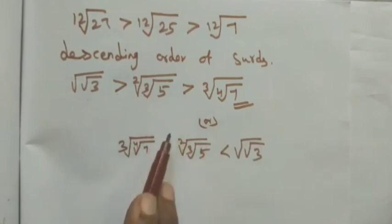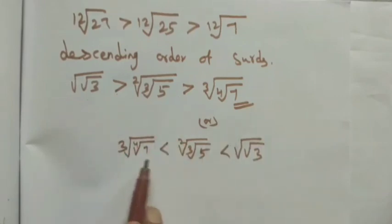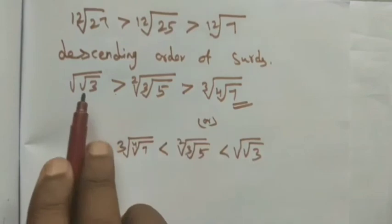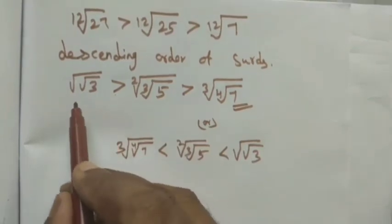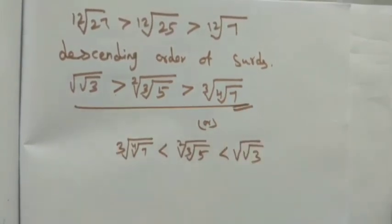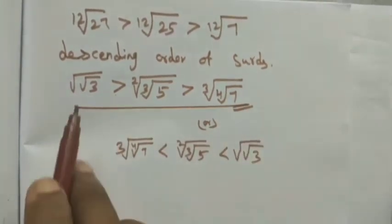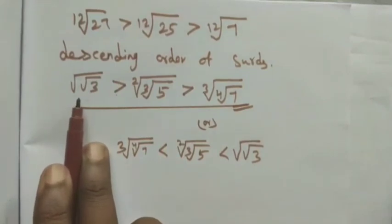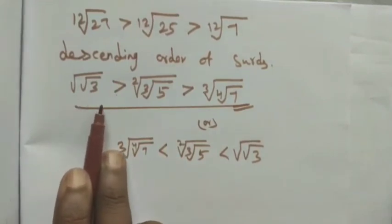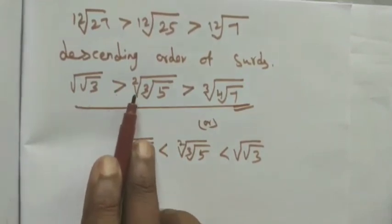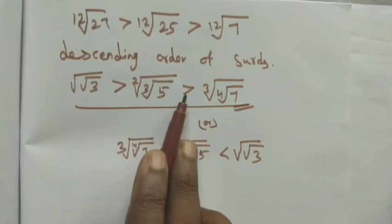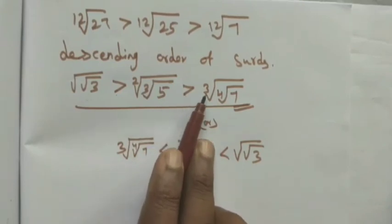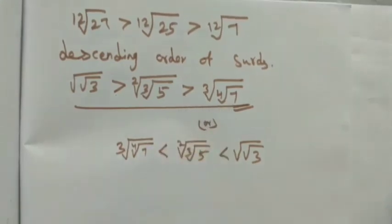Either we can write it with greater-than signs or less-than signs. If you reverse the order: cube root of 4th root of 7 < square root of cube root of 5 < square root of square root of 3. In descending order the final answer is: square root of square root of 3 > square root of cube root of 5 > cube root of 4th root of 7. Thank you students.